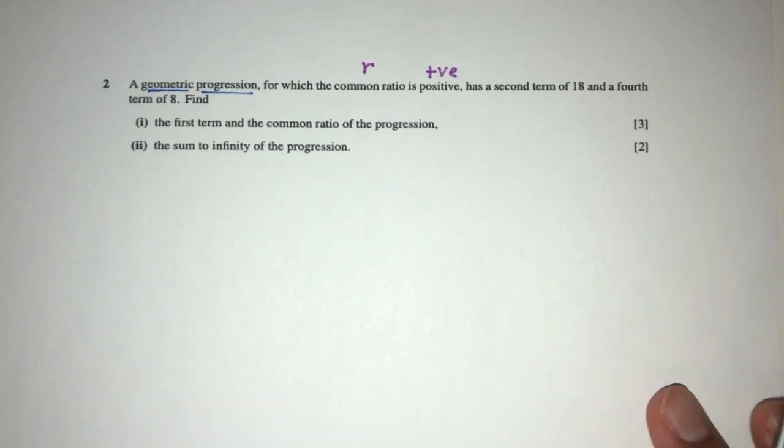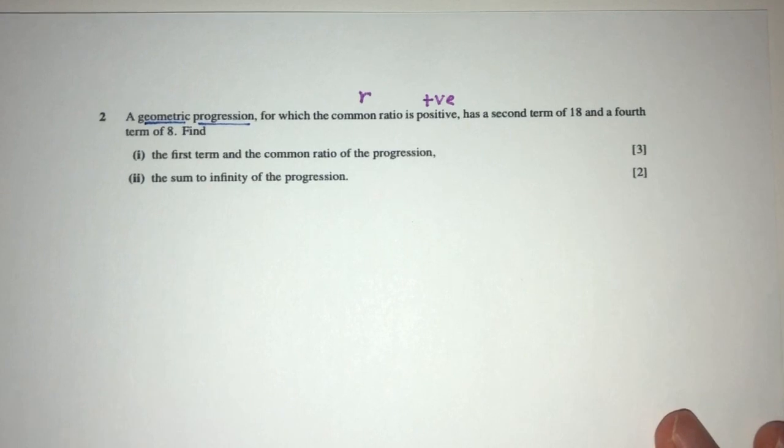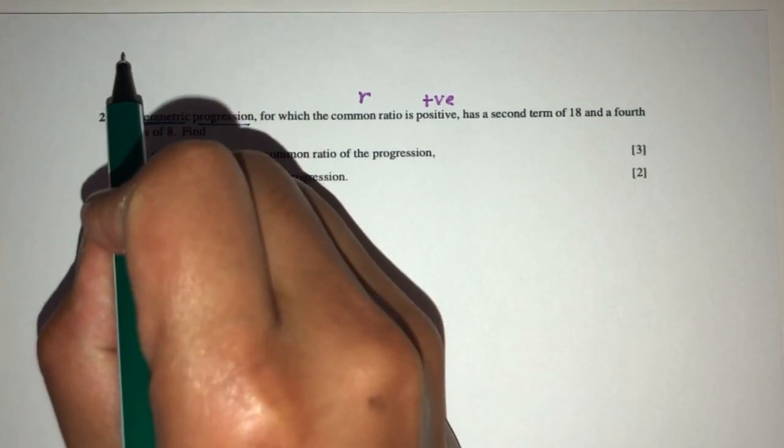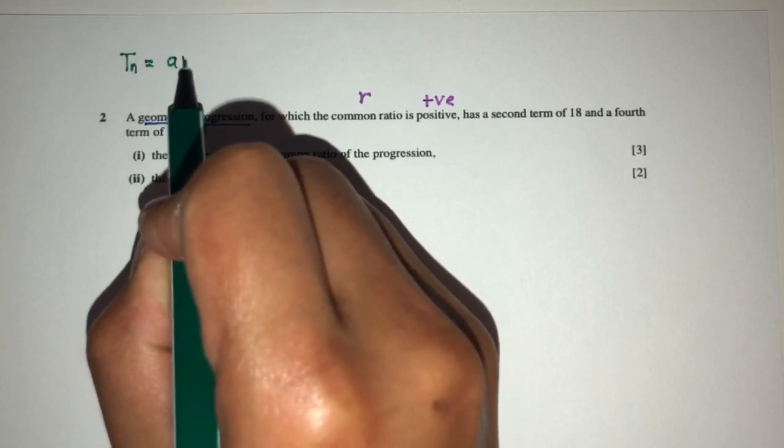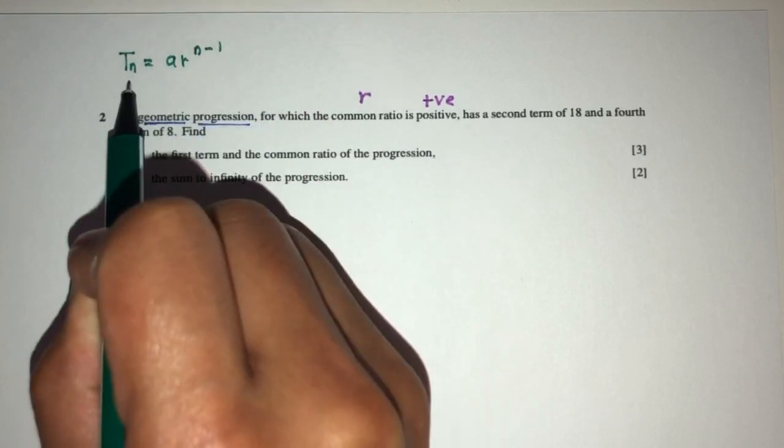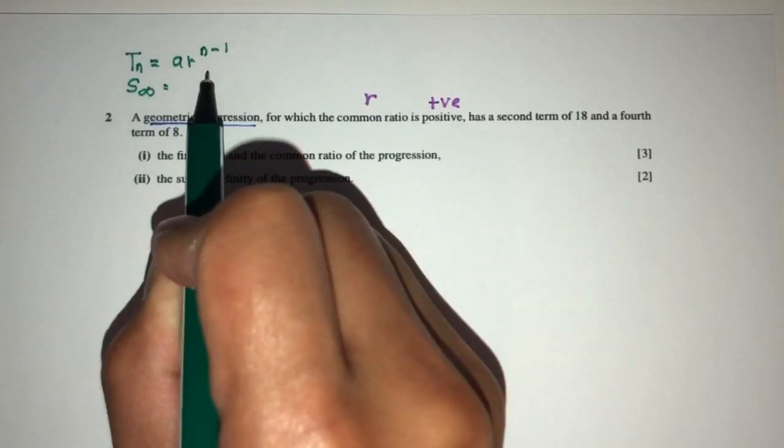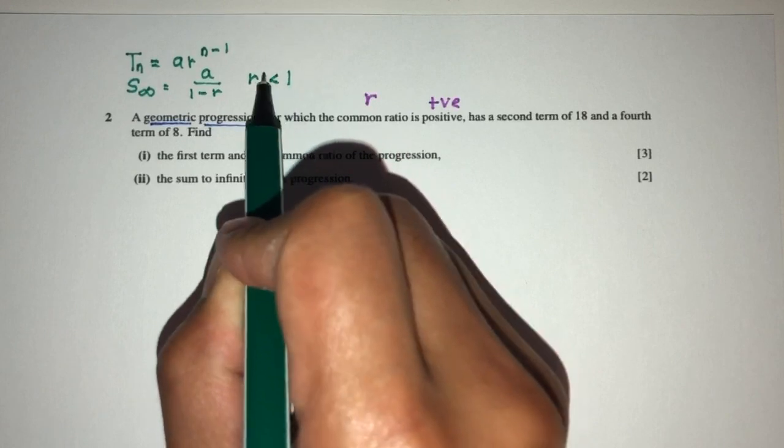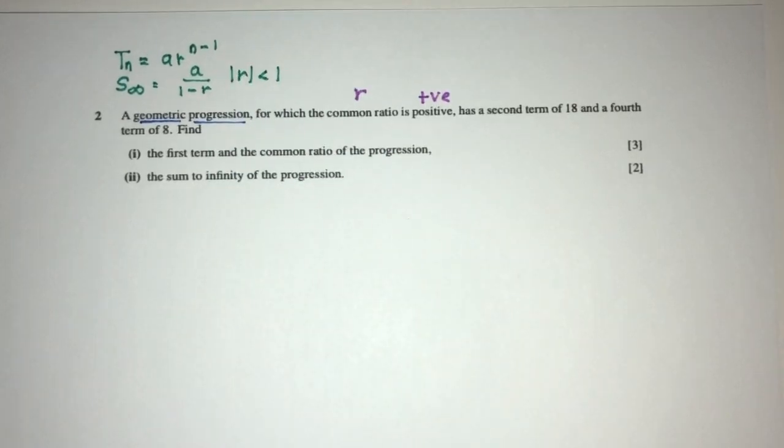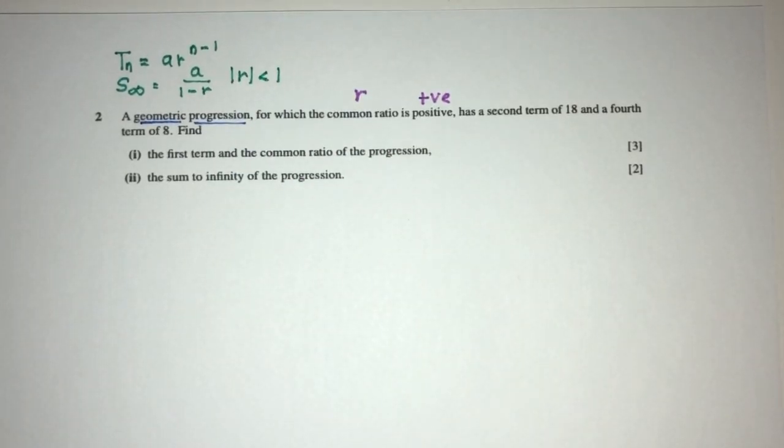Now, once we know this, let's first write down all the formulas that we know for this kind of progression. So, we have the nth term is given to you by ar^(n-1), and the sum to infinity is a/(1-r) for |r| < 1. This is the given formulas we have for this kind of progression. Again, this is given to you.